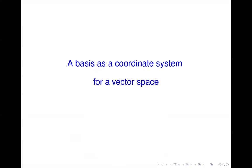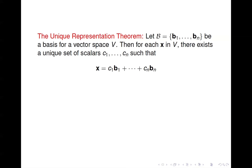Today we're going to talk about using a basis as a coordinate system for a vector space. We start off with the unique representation theorem. It says: suppose you have a basis B consisting of the vectors B1 through BN, and you choose some X from the vector space V. The theorem says that no matter which X you pick, there are a unique set of scalars C1 through Cn that you can use to take a linear combination of the vectors in your basis to produce X.